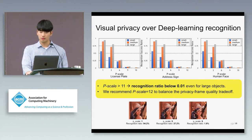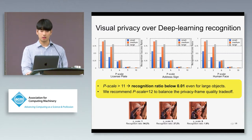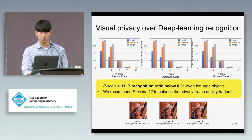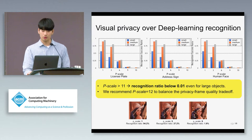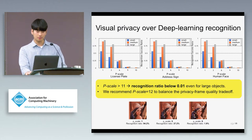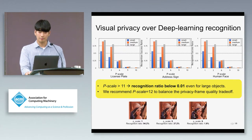More specifically, we categorize the image datasets by object type — such as license plate, address sign, and human face — and also by their size and pixelation scale.